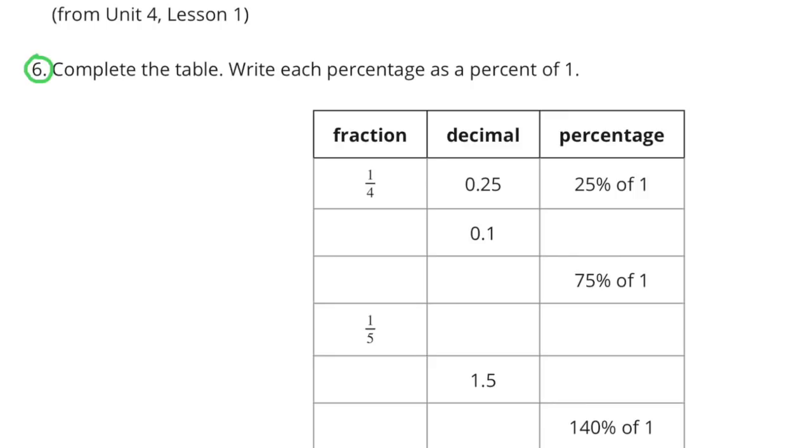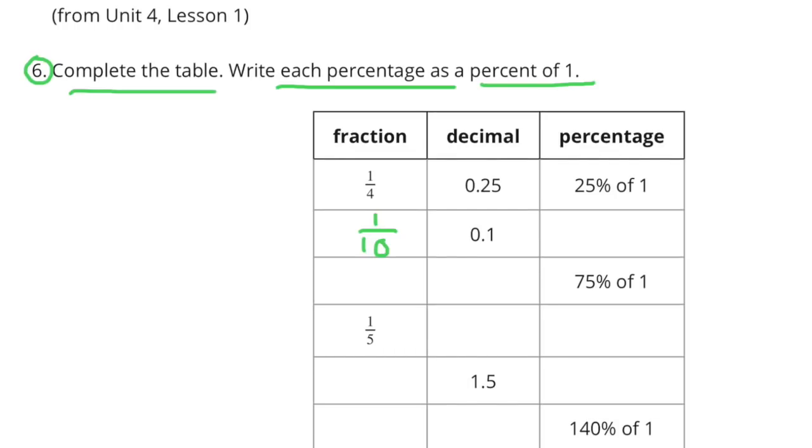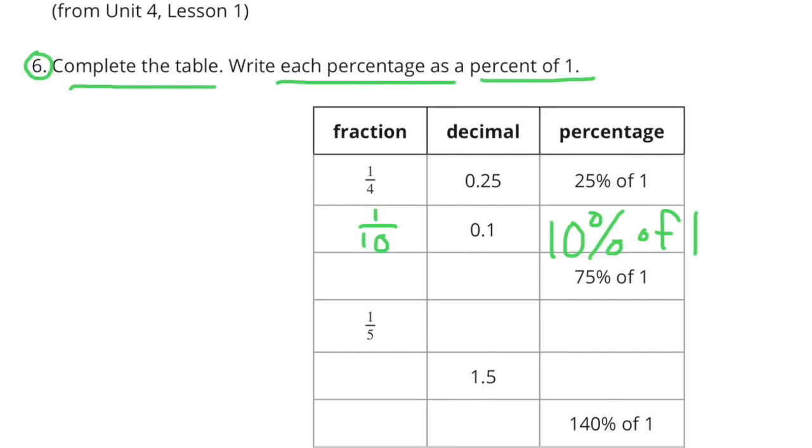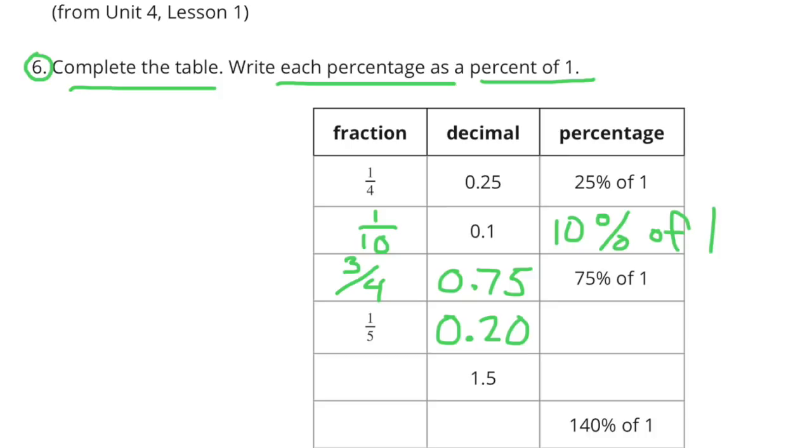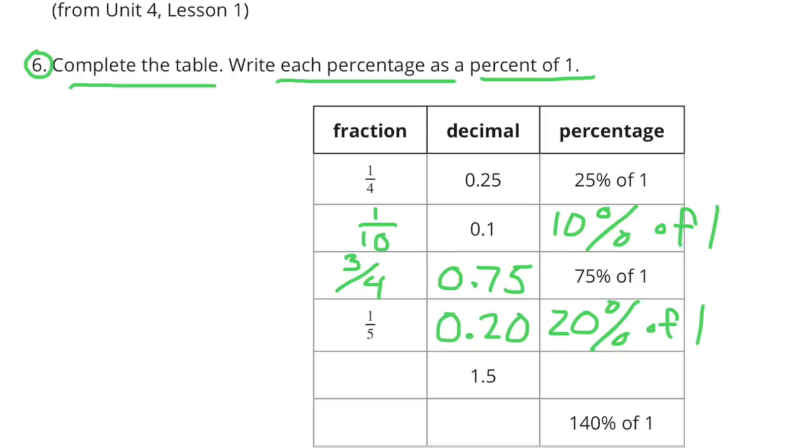Number 6. Complete the table. Write each percentage as a percent of 1. One-tenth can be written as 1 over 10 and is 10% of 1. Seventy-five percent can be written as three-fourths or three-quarters and is 75-hundredths. One-fifth, or one divided by 5, is two-tenths or twenty-hundredths, which is 20% of 1.